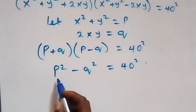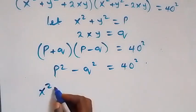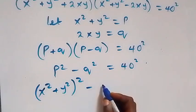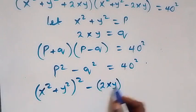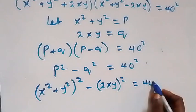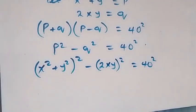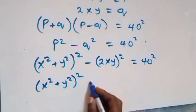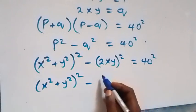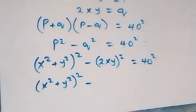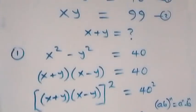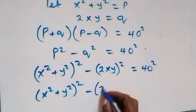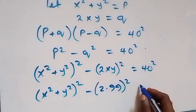Substituting back the values of p and q, we have (x squared plus y squared) squared minus (2xy) squared equals 40 squared. From equation 2, xy equals 99, so we substitute that value in.